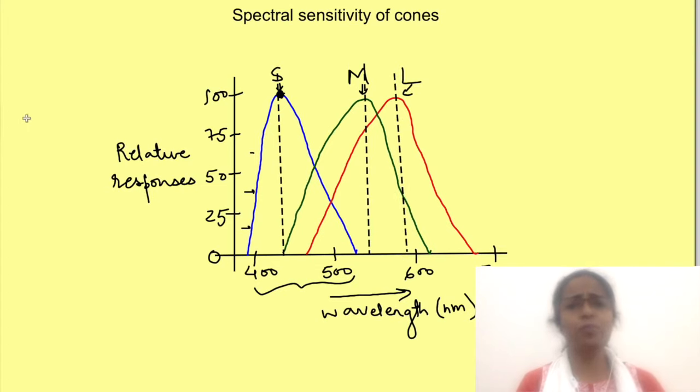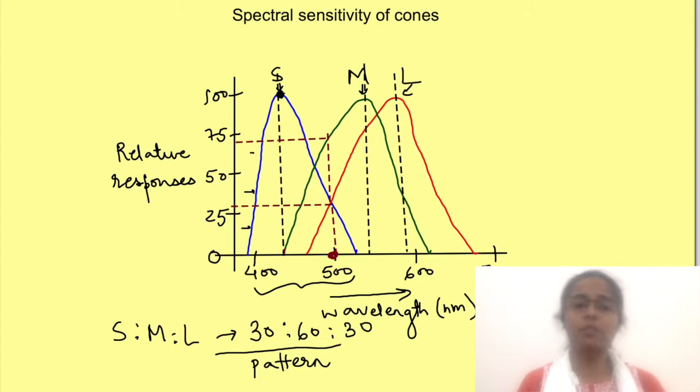But you see there is quite an overlap between the spectral sensitivity graph of different cones. That means photons from a particular wavelength will elicit varied responses from different cones. So suppose a photon from 500 nanometer wavelength will excite S and L cones almost equally while M cones will be stimulated more. So there is a pattern of response which we can write like this: S is to M is to L cones responses, say here it is 30 is to 60 is to 30, where the numbers represent the relative responses from the different cones. So each wavelength is eliciting a pattern of responses from cones. So because of this pattern of responses we can differentiate a lot of colors just by the presence of three cones.